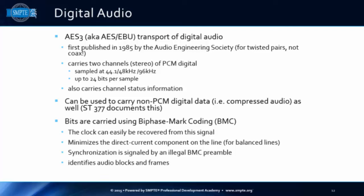The bits in AES-3 are carried using biphase mark — a particular electrical coding style that makes clock recovery easy. It also minimizes DC component on the line because many balanced lines go into transformers at the receiver. Sync is specified using an illegal biphase mark codeword — that's how you identify your blocks and frames. It's crude but effective, and we've been using it since.